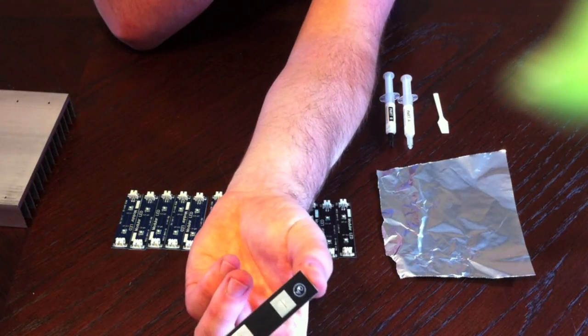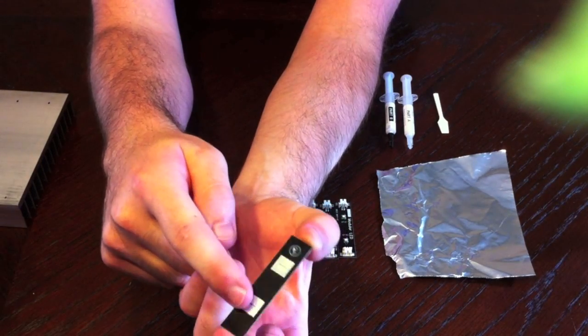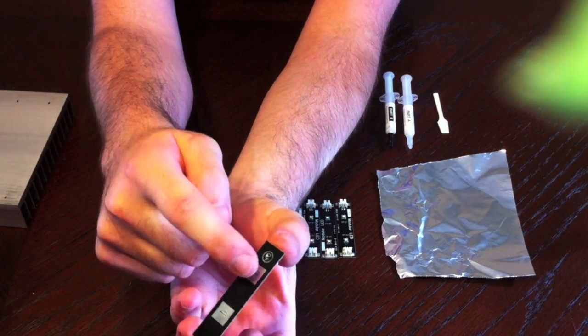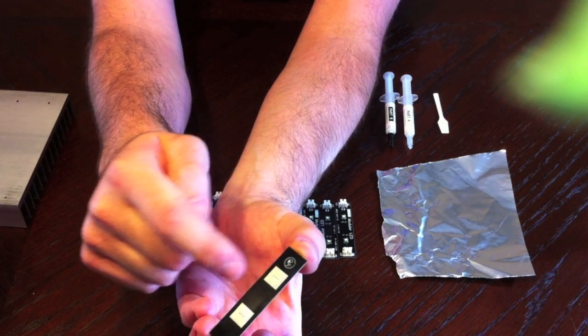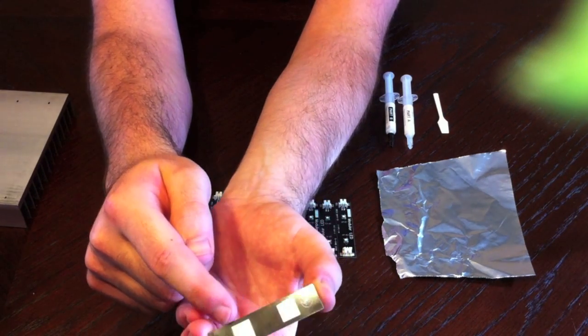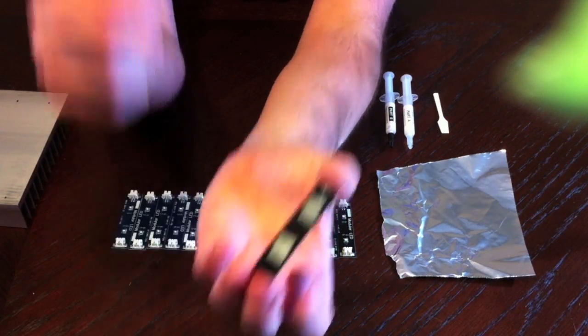You'll see on the bottom of the LEDs, the thermal transfer pads. This is where you should apply the glue, just two little drops in the center of each of those. And then press firmly onto the heat sink and that will transfer the heat right out of the LEDs into the heat sink.